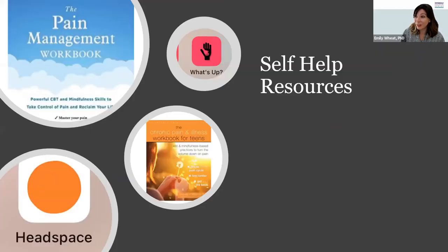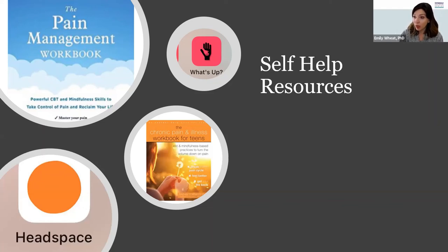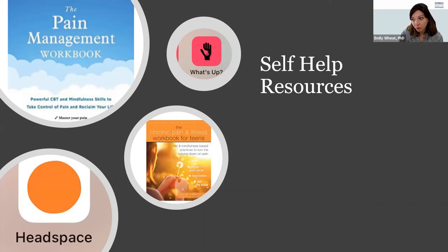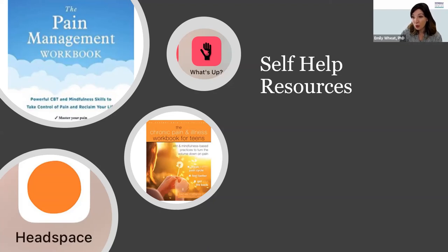For resources, if you're looking to explore on your own, there are a couple of books from a workbook and self-help perspective. From the adult side, there's a blue pain management workbook, and an orange workbook specifically for teens — both by Dr. Rachel Zoffness. These focus on the CBT side of things and also include some third wave and relaxation therapies. Another app I really like is called What's Up — not to be confused with WhatsApp — which includes a list of different types of thinking traps and cognitive distortions, along with various activities.